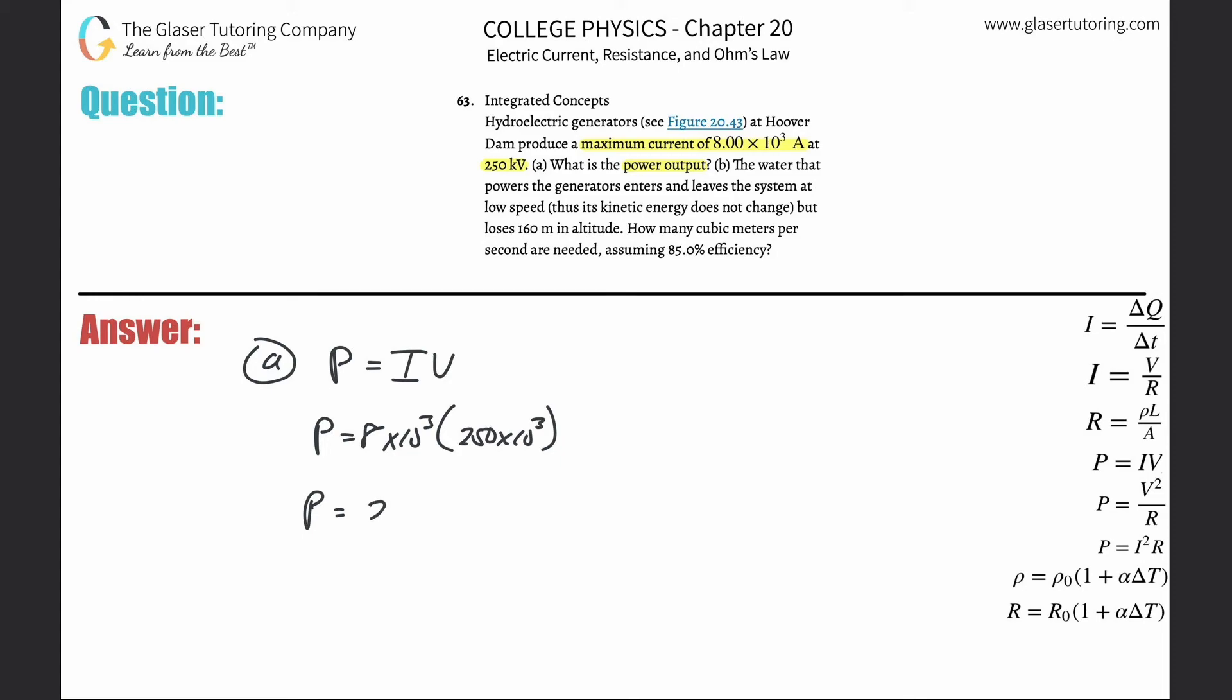This comes out to be about 2×10⁹. That's about 2 billion watts. Remember a watt is simply a joule per second, so this is equivalent to 2×10⁹ joules per second. This is the rate of energy output of the Hoover Dam: 2 billion joules every single second maximum.